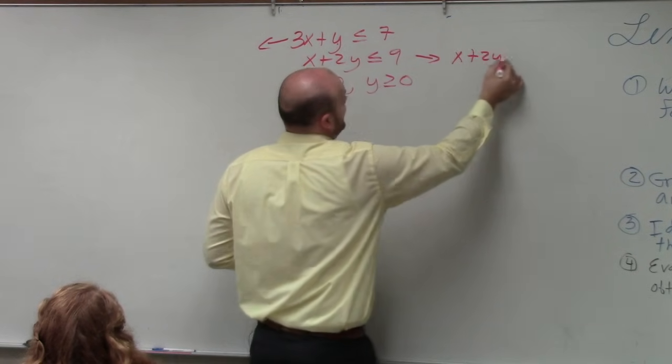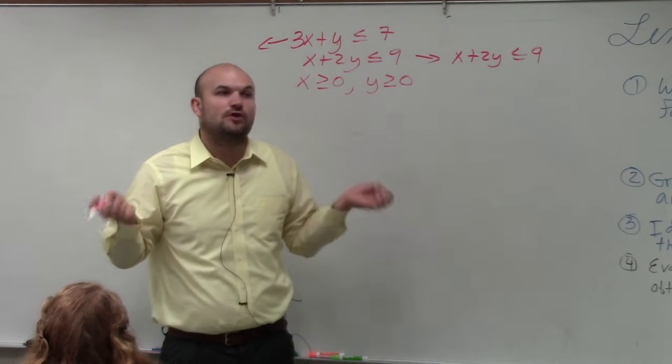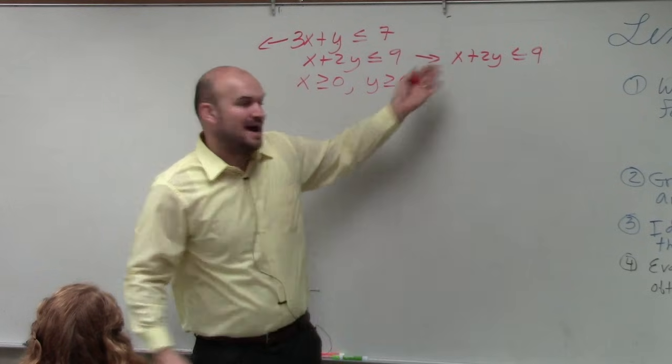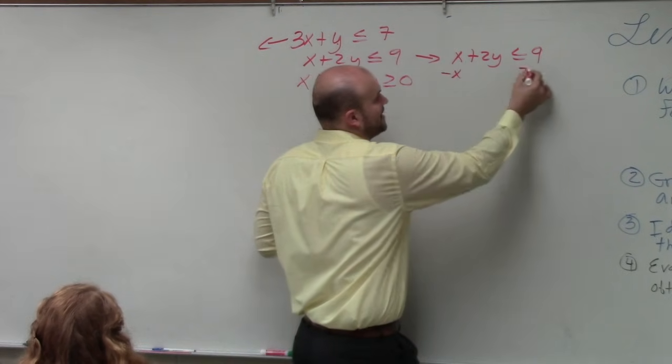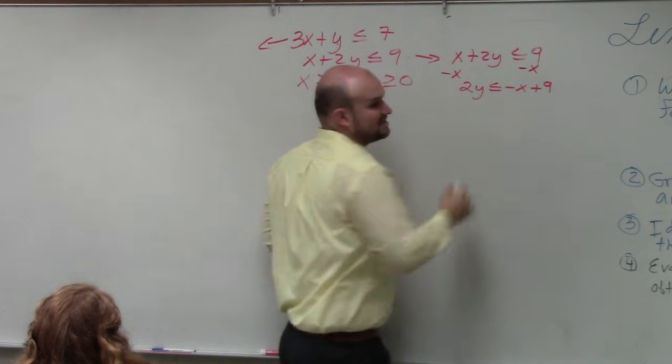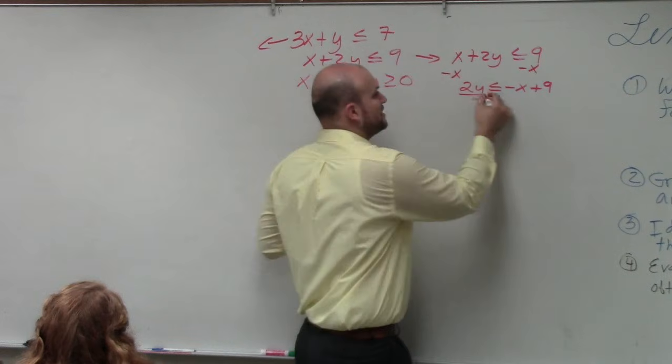So here, I have x plus 2y is less than or equal to 9. To write it in slope-intercept form, you have to solve for y. So here, you guys can see my y is being multiplied by 2, and I'm adding the x. So I subtract the x on both sides. I'm left with 2y is less than or equal to negative x plus 9. Now, I need to undo multiplying by 2, so I divide by 2.